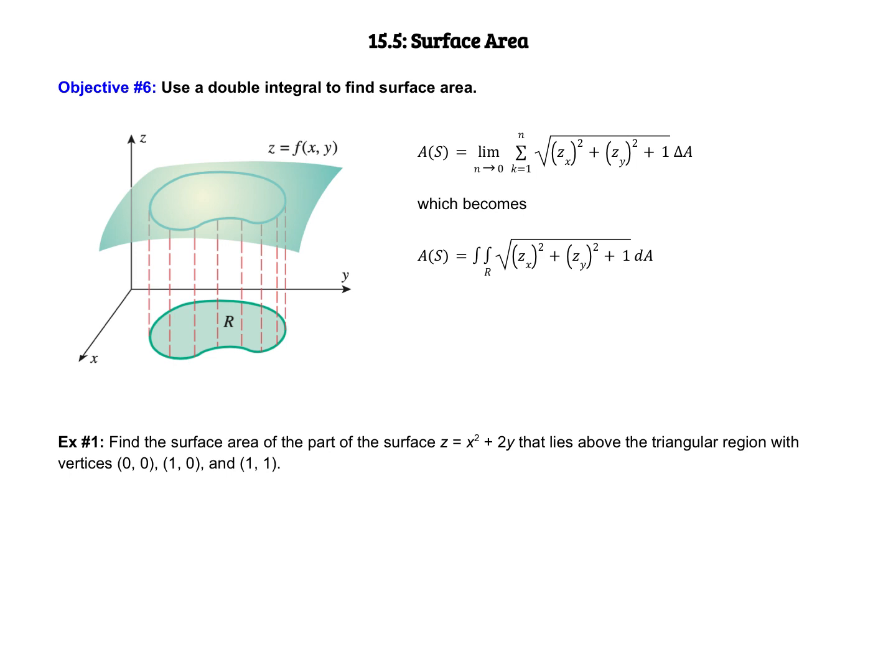Rather than going through the derivation, I'm just going to tell you what the formula is. Surface area - in this case, if we have this region R in the xy plane and we map it up onto z, we're looking for this area right here on the surface.